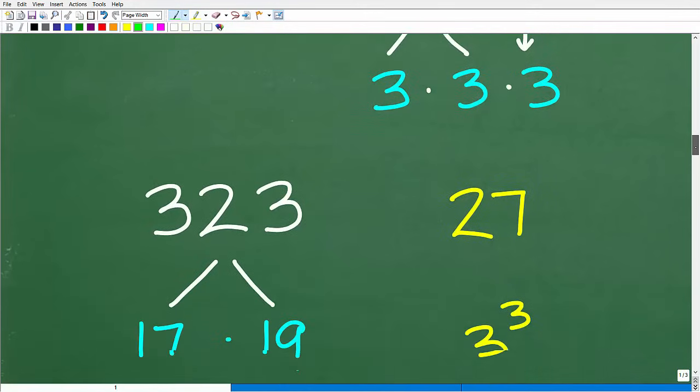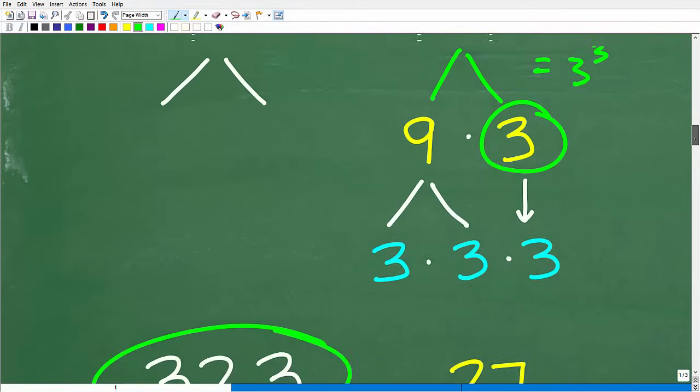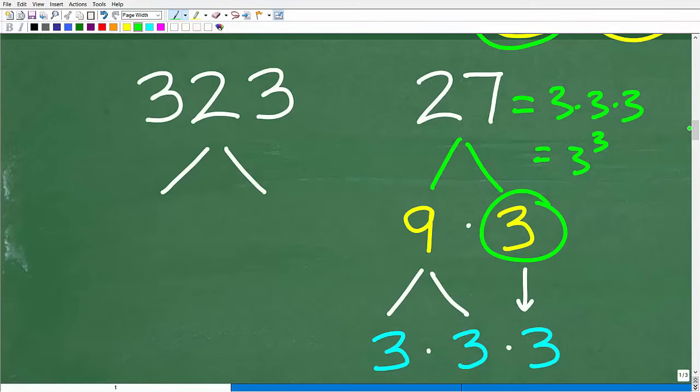But 323 is a whole different ballgame. Now, you can see here, I'm already showing you the factors, okay? We have two prime numbers as the factors, 17 and 19, okay? Now, how would you get to those factors? Well, let's suppose you had a calculator. You might say, all right, well, if you don't know any divisibility rules, you can just start taking 323, maybe divide it by 3. Well, that's not going to work. Divide it by 4, divide it by 5, 6, 7, 8, 9.